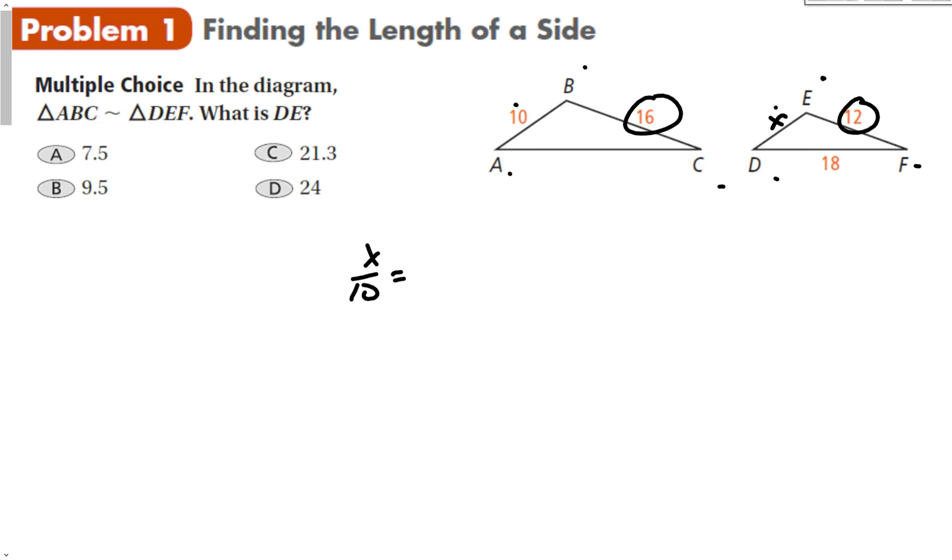Make sure you put the same triangle on top both times or on the bottom both times. So X over 10 equals 12 over 16. Now we have my proportion. All we have to do is cross multiply and divide. That's 16X equals 120. Divide both sides by 16 and I get X equals 7.5, which is A.